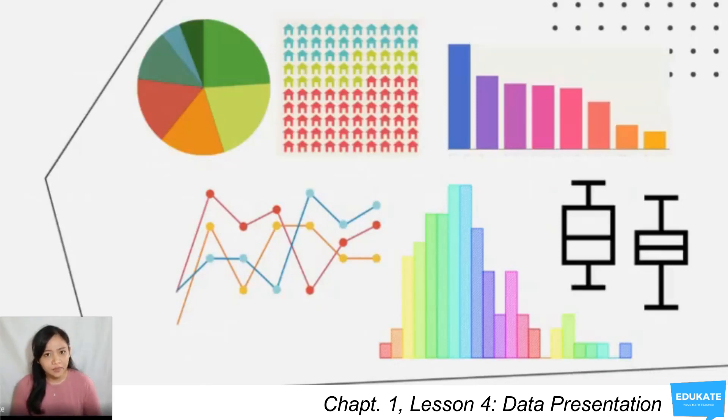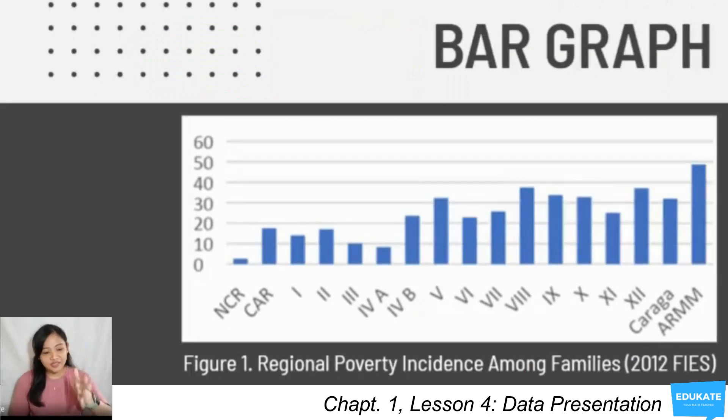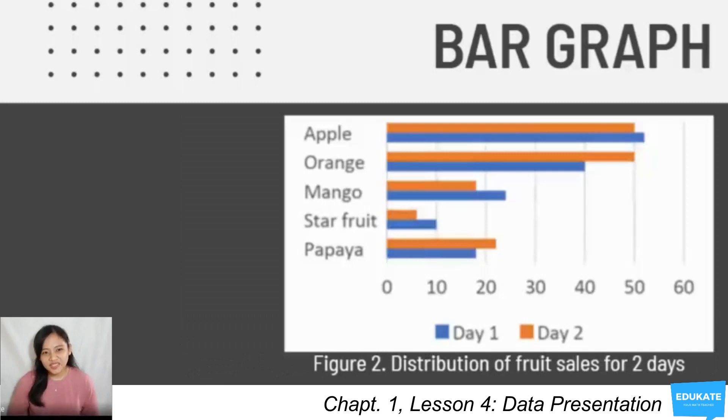Diving deep into this, you have the first one, which is the bar graph. This is an example of a vertical bar graph. This is also an example of a bar graph, however, it is presented in a vertical way and with clustered bar graphs for each. This is what we call a clustered bar graph.